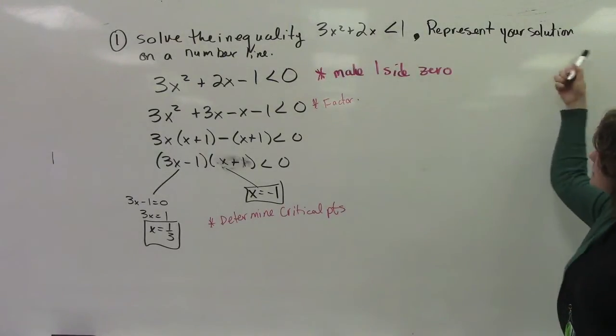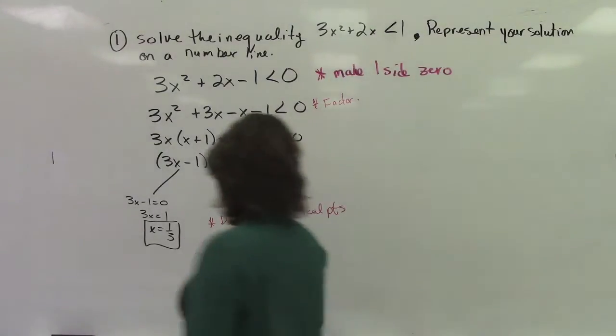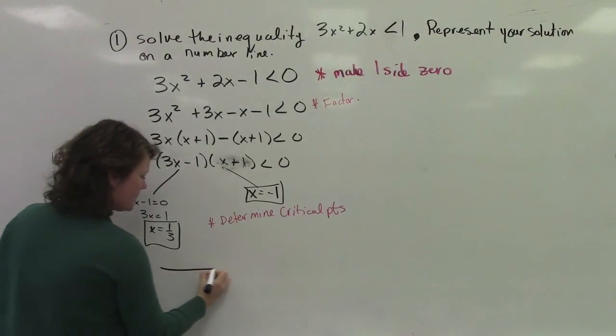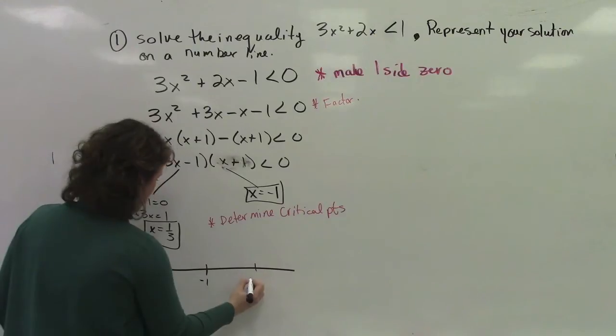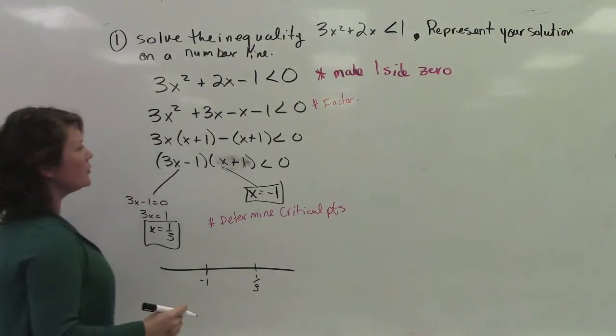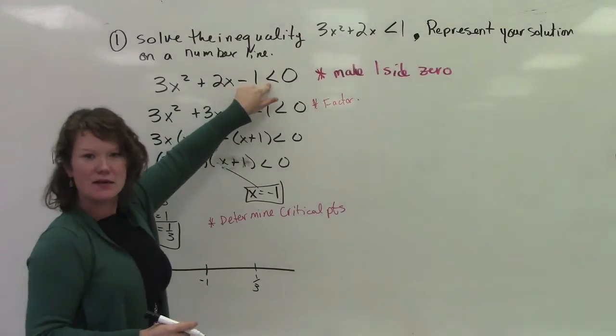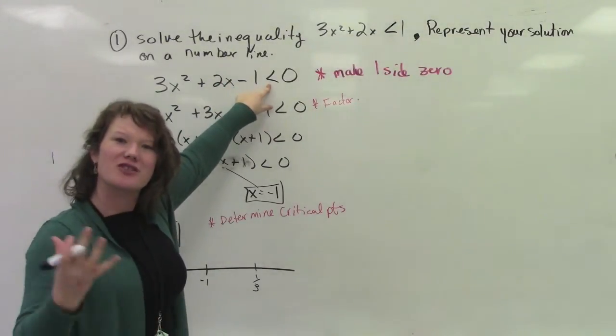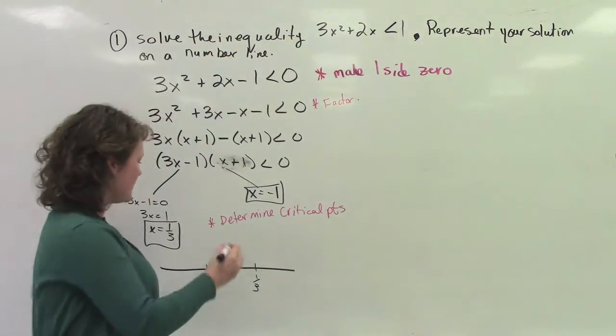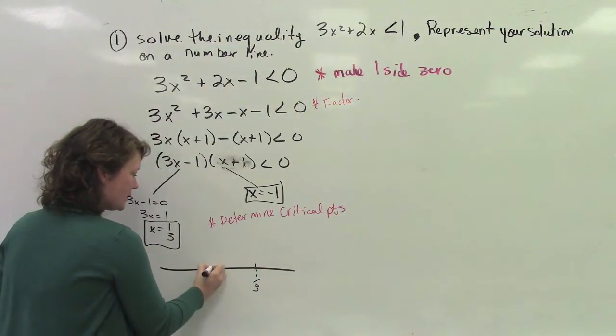So if I were to represent my solution on a number line, I would set this up here. I would say negative 1 and 1 third. Well, notice that this is less than 0. So it means that it does not actually include those critical points as an answer.